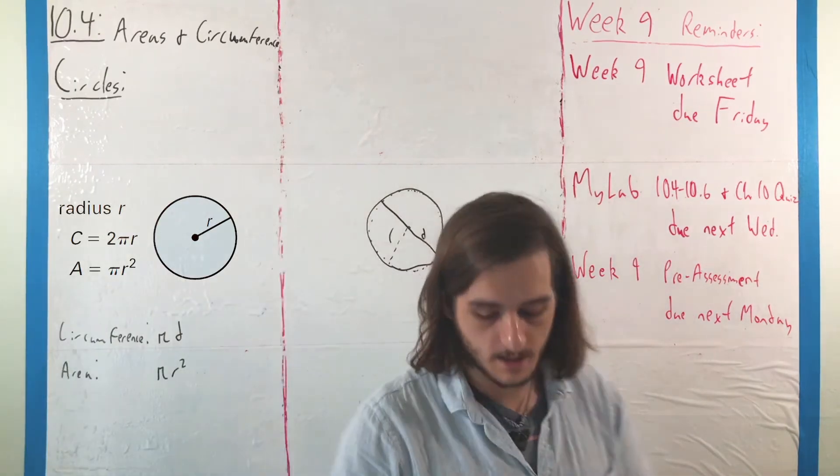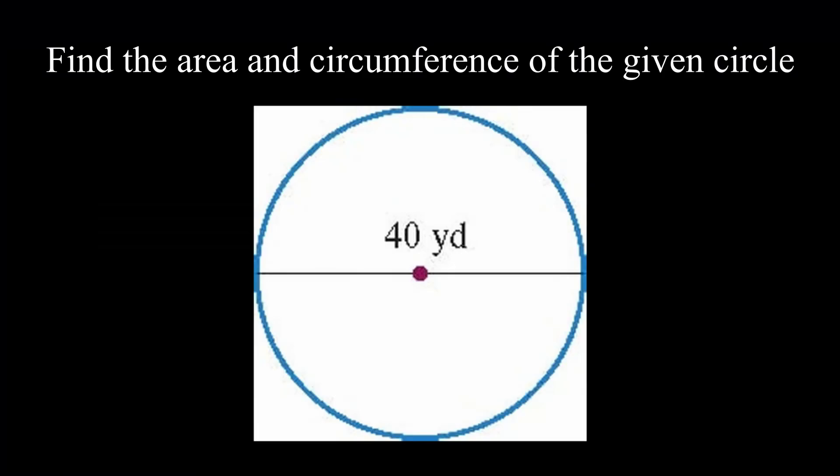So, if you want to think about this in the context of the example, let's say that we have a circle with diameter 40 yards, and what we want to do is find the circumference as well as the area.